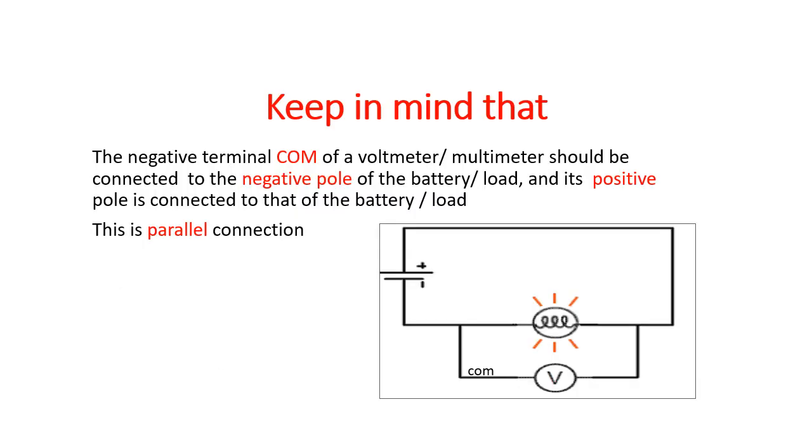Keep in mind that, whether using a voltmeter, a multimeter, or any other instrument to measure the DC voltage, the negative terminal com of this instrument should be connected to the negative pole of the battery or the load whose voltage is measured, and the positive pole of the instrument is connected to the positive pole of the battery or the load. Positive on positive and negative on negative. This is called parallel connection.